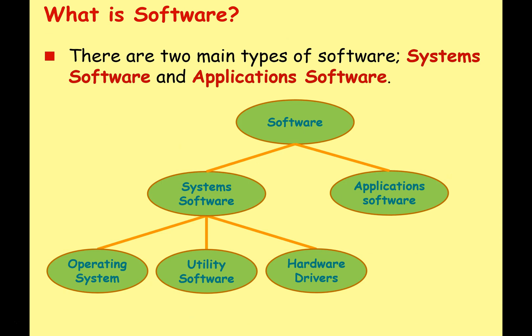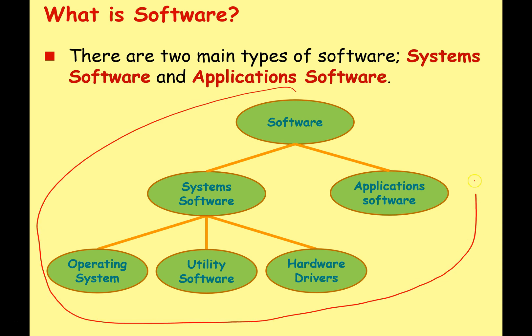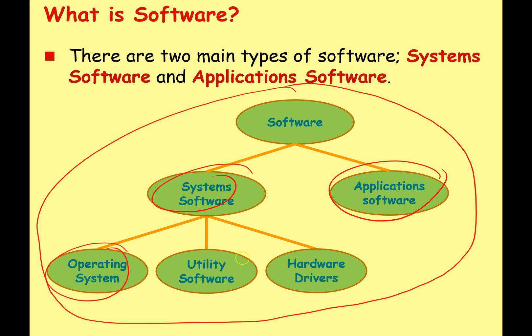There are two main types of software that we need to be aware of: system software and application software. This is a kind of conceptual overview showing how we're breaking down software for this series of lessons. We've got system software and application software, and then we're going to break system software down further into the operating system, utility software, and hardware drivers.